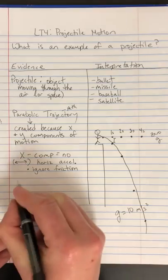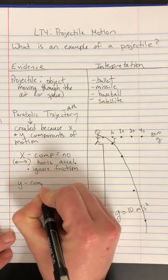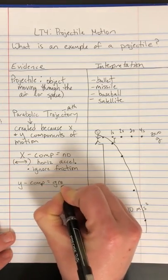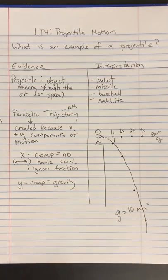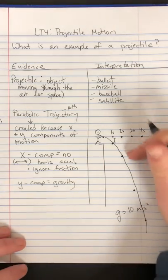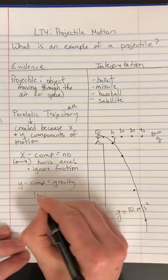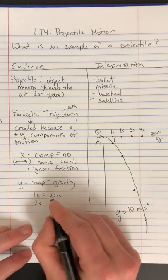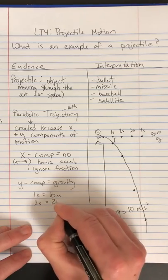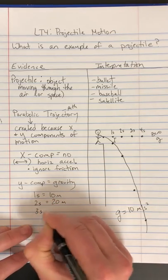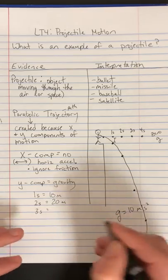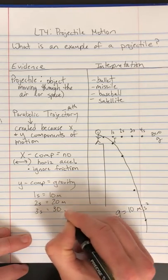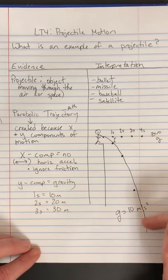So the Y component, the only thing that we're going to worry about here is gravity. And we already know that that's about 10, which is where you get this shape from. So in one second, it falls about 10 meters. In the second second, it falls an additional 20. In the third second, it falls an additional 30. So like 50 total. So that's where you're seeing that bigger gap.